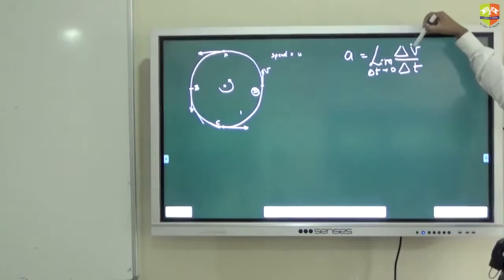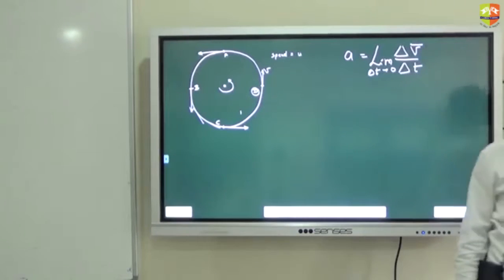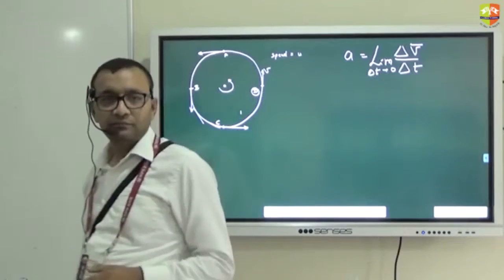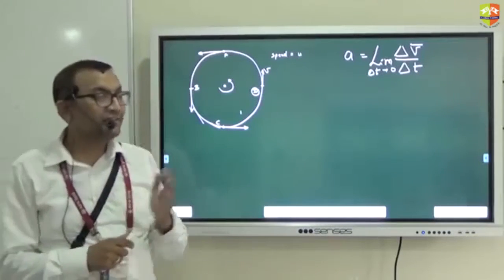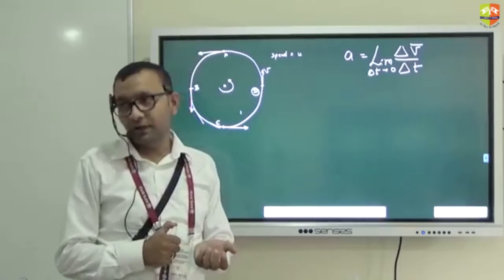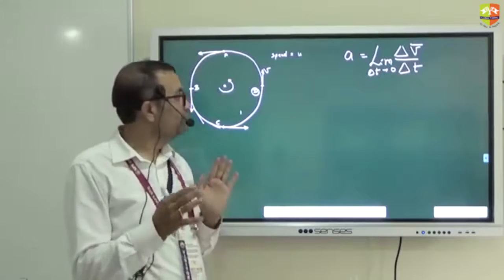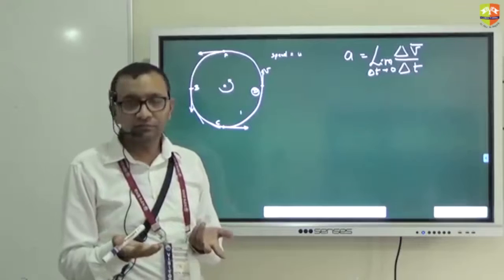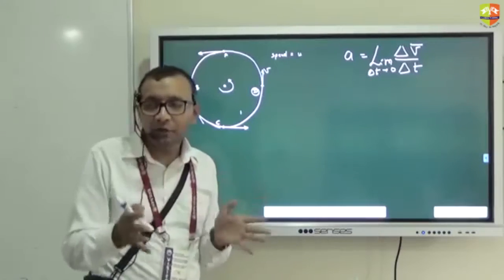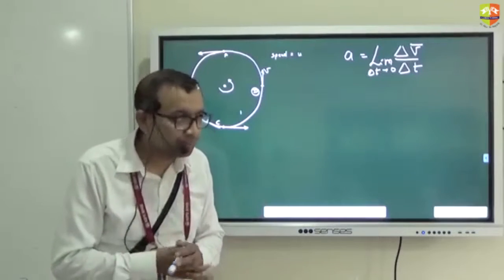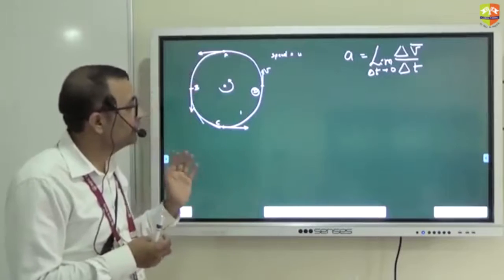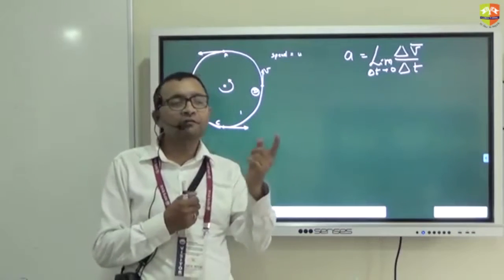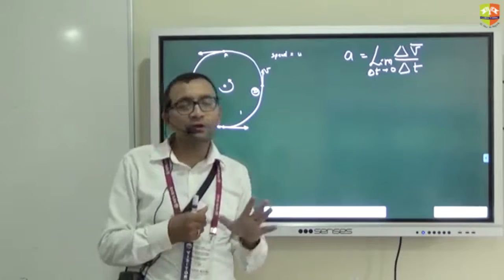This delta v is the change in the velocity vector. It is a vector subtraction — it is not the magnitude. The magnitude of change is 0, meaning the change in magnitude is 0. What I am trying to find here: first I will subtract the two vectors, then I will find the magnitude of that subtraction.